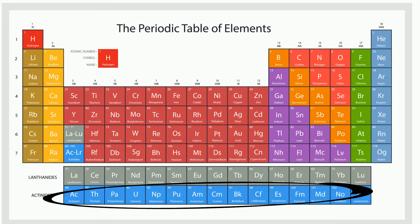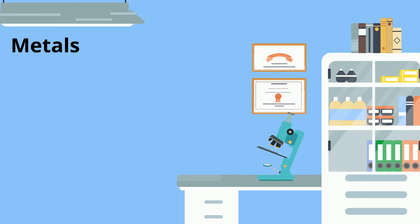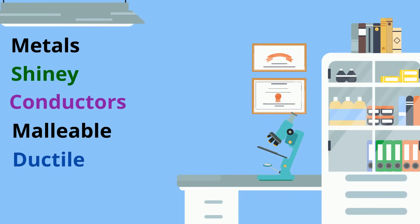If you were to summarize the properties of metals: shiny, conductors, malleable, and ductile.